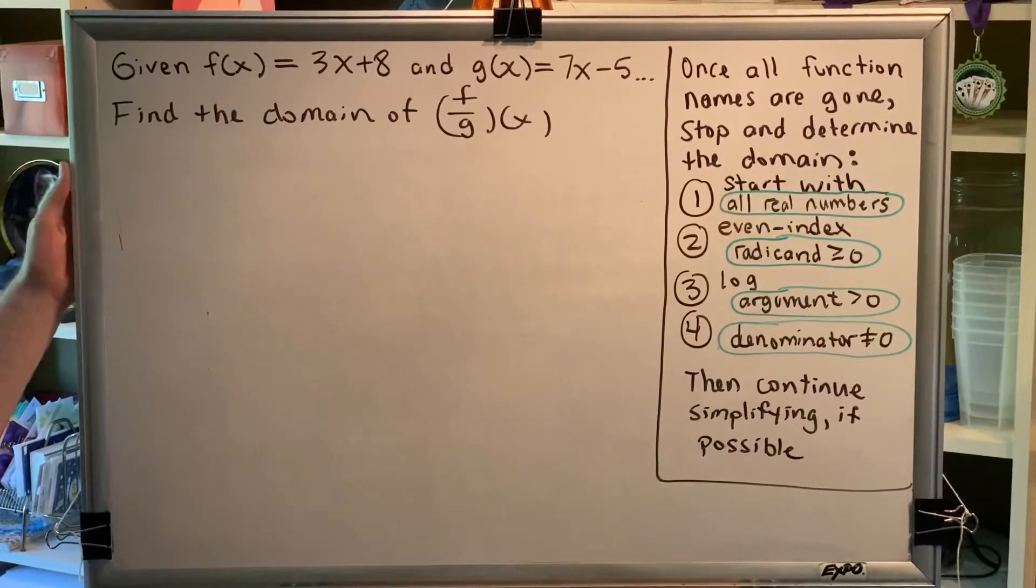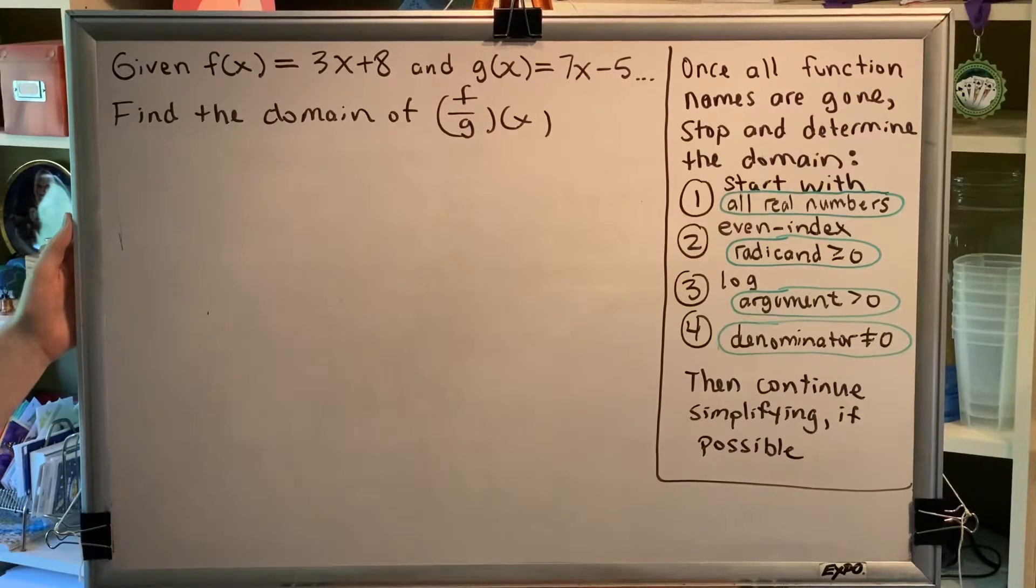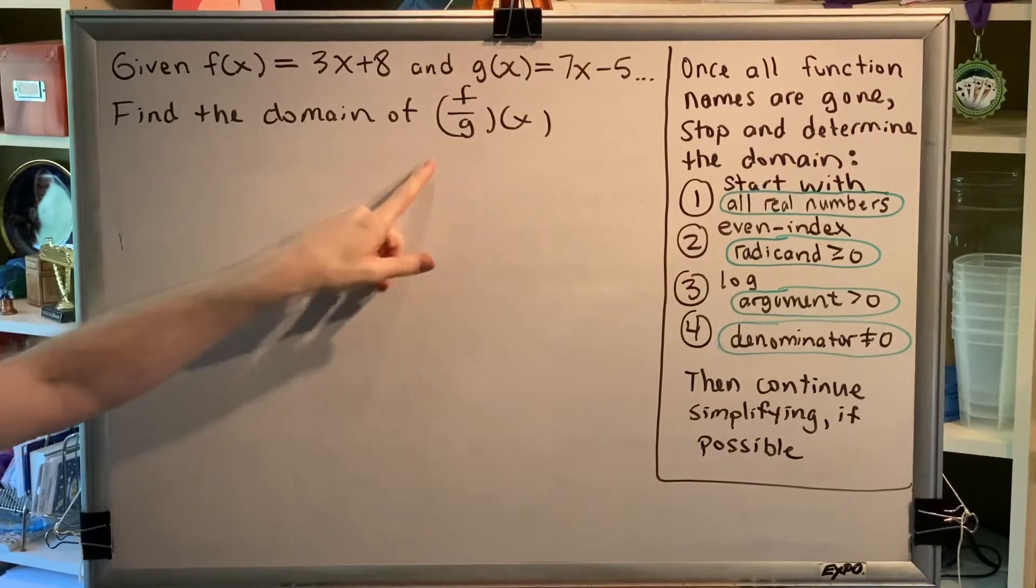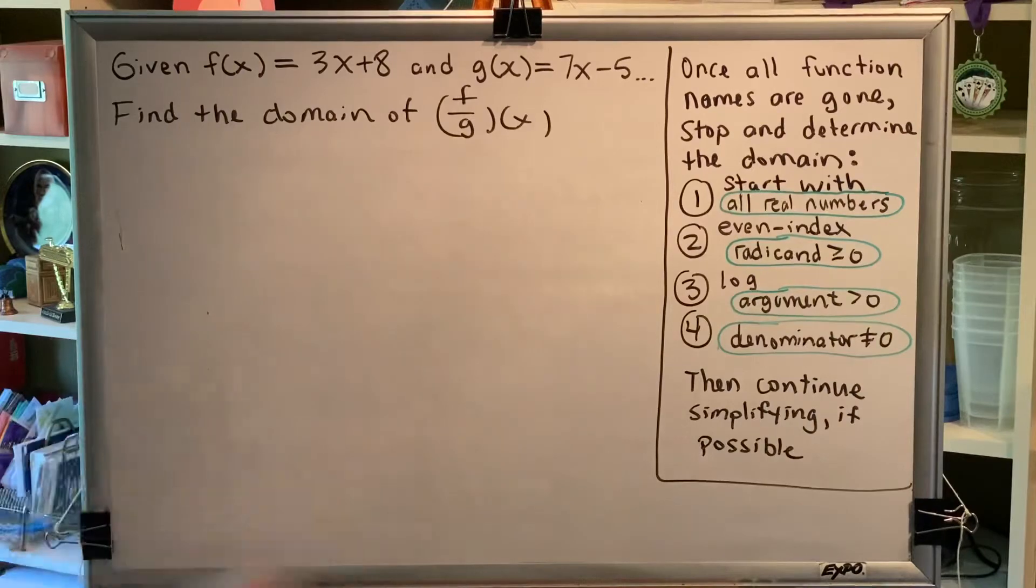Given f of x equals 3x plus 8 and g of x equals 7x minus 5, find the domain of f over g of x.